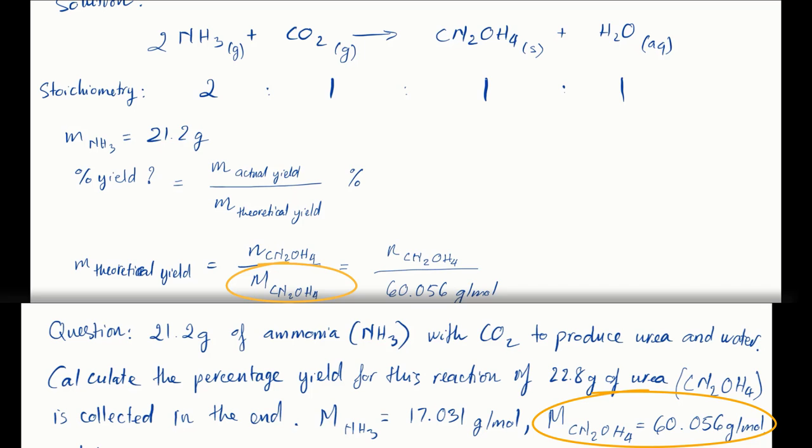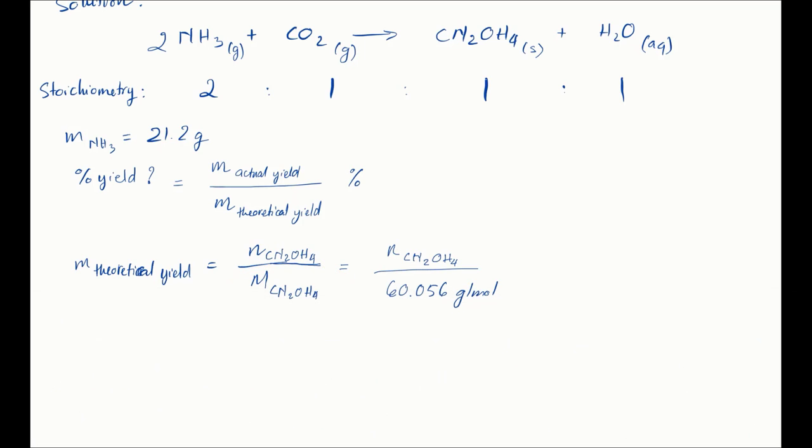To do that though, we need to look at the stoichiometry of the chemical equation. We see that we need two moles of ammonia to make one mole of urea. So the theoretical number of moles of urea will be half of whatever the number of moles of ammonia that we put in.